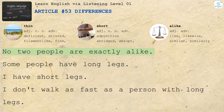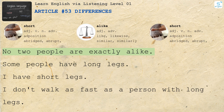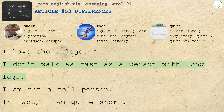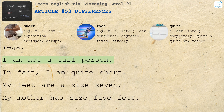No two people are exactly alike. Some people have long legs. I have short legs. I don't walk as fast as a person with long legs. I am not a tall person. In fact, I am quite short.